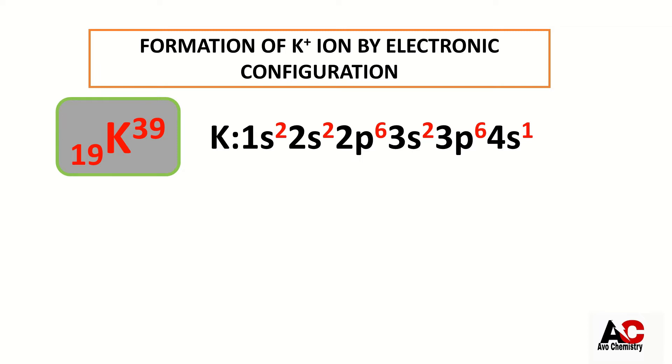I have already uploaded a lecture on electronic configuration of first 20 elements. You may watch that lecture to understand electronic configuration. This configuration shows that potassium atom has 1 electron in the last or valence shell, and this 1 electron in the valence shell shows the instability of the potassium atom.